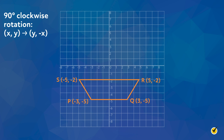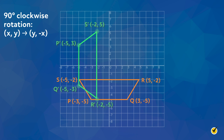Point P (-3, -5) becomes point P' (-5, 3). Point Q (3, -5) becomes point Q' (-5, -3). Point R (5, -2) becomes point R' (-2, -5). Point S (-5, -2) becomes point S' (-2, 5). Now let's plot these points and create the trapezoids on the coordinate grid.